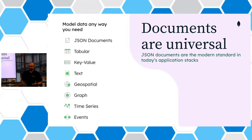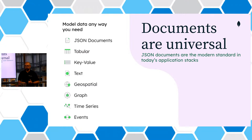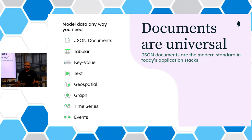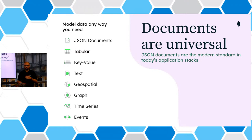The great thing is that we can have all these different types of data models within the same database, making it easy to combine data. For example, a machine producing time series data can be stored in MongoDB, and we can also store the general configuration or digital twin of that machine in MongoDB. Then we can easily do cross-references between the different data sets within the same system — a strength of having one general database supporting many use cases.